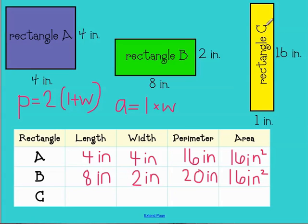And finally, rectangle C has a length of one inch and a width of 16 inches. So perimeter equals two times one plus 16. One plus 16 is 17. And 17 times two is 34. So perimeter for rectangle C is 34 inches.